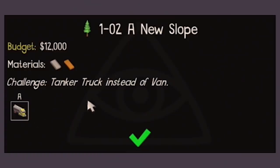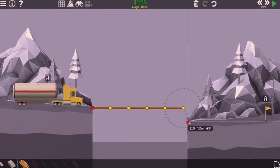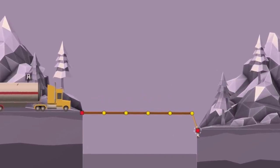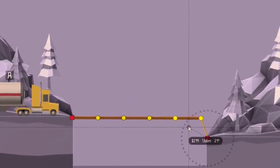A new slope. Tanker instead of a van. So this is going to be much heavier. But I'm pretty sure I'll be able to find a stupid way to do this even with only a $12,000 budget.